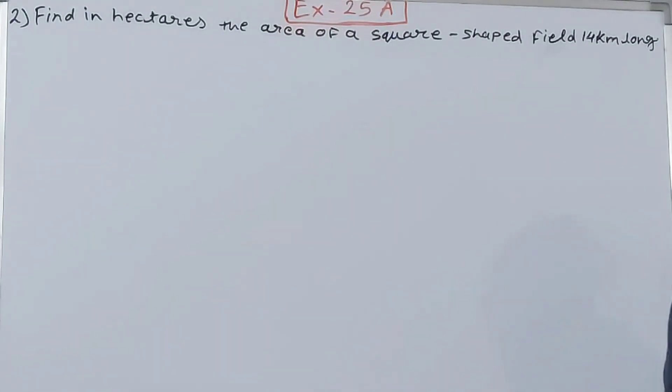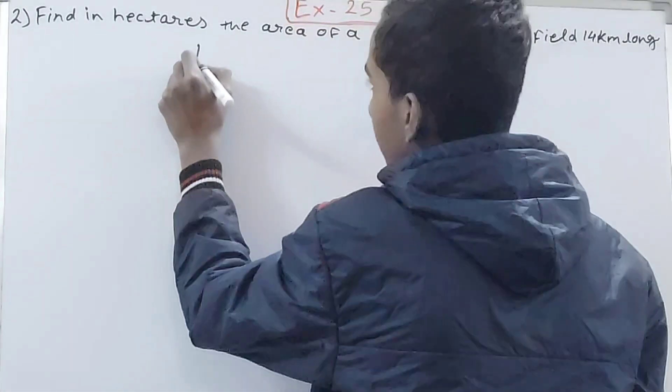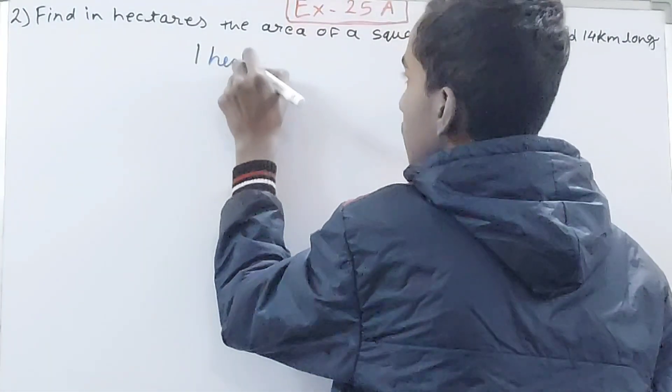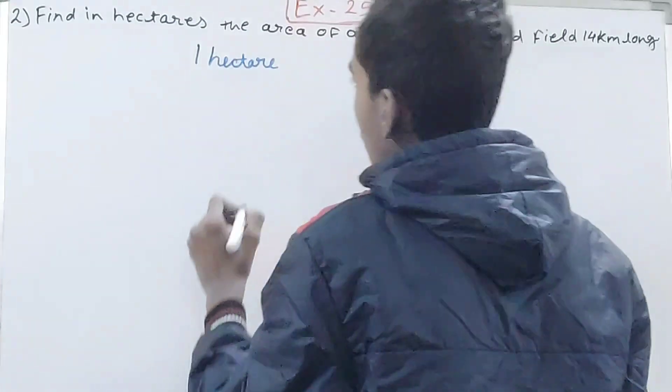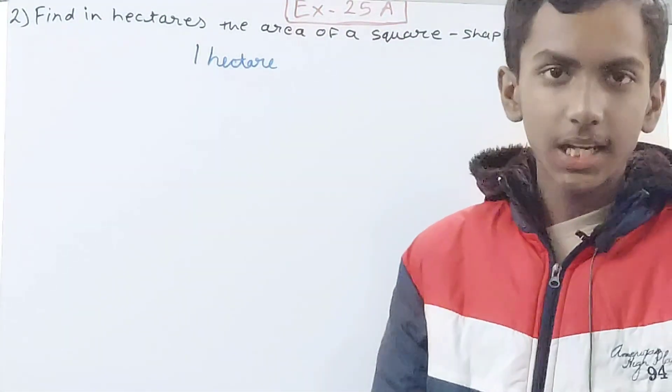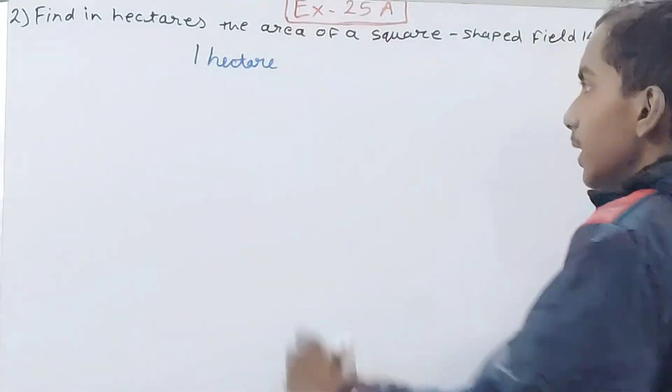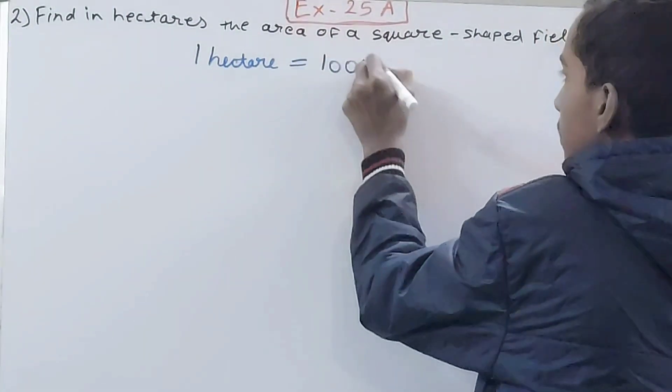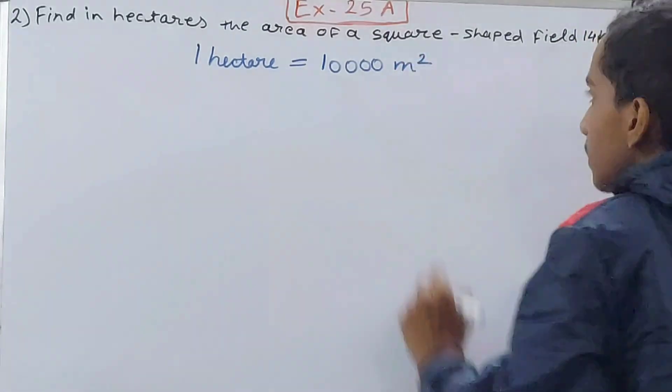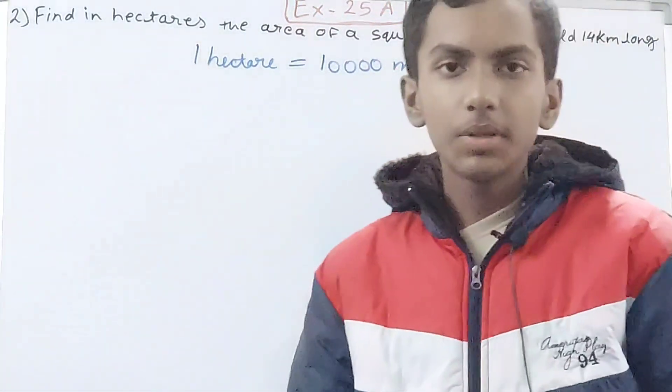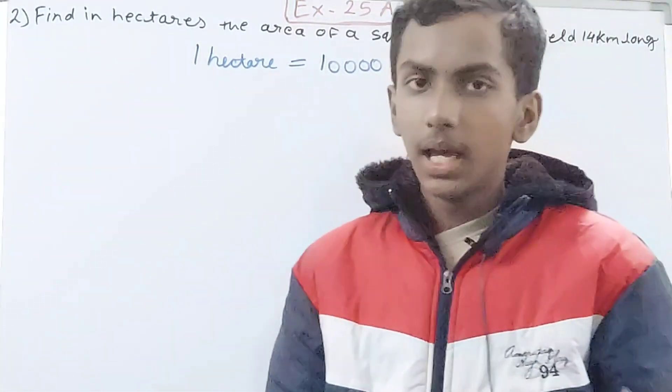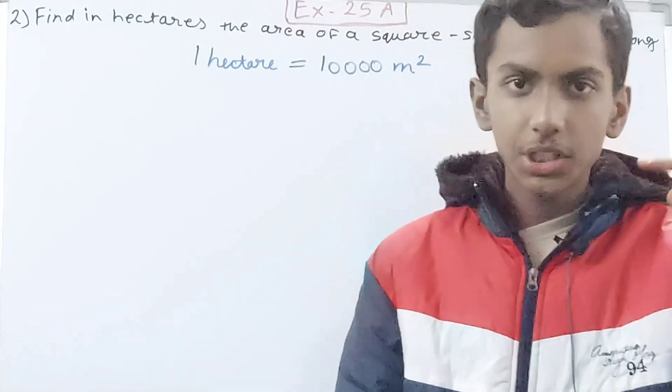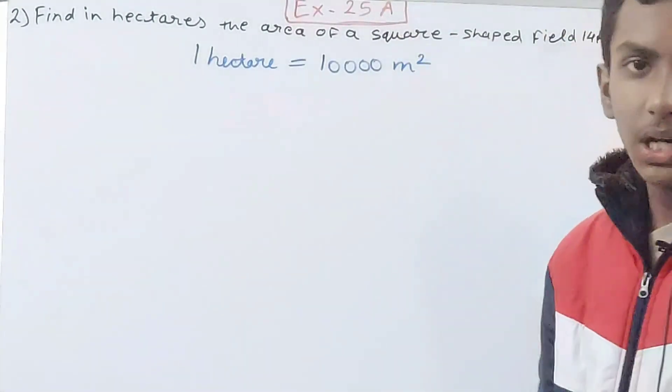So we have to find the area in hectares of the square shaped field that is 14 kilometers long. See, what is one hectare? How many meters are in one hectare? One hectare is equal to 10,000 square meters.